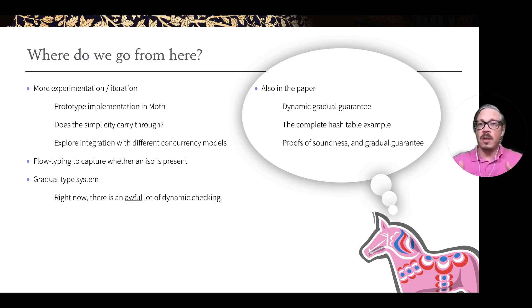Right now there's a lot of dynamic checking going on, especially because we have an object-based system. In the paper, you can read more about our various thoughts of designing for safe concurrency. You can read about our dynamic gradual guarantee, a complete example in the Dala language and proofs of soundness and more.